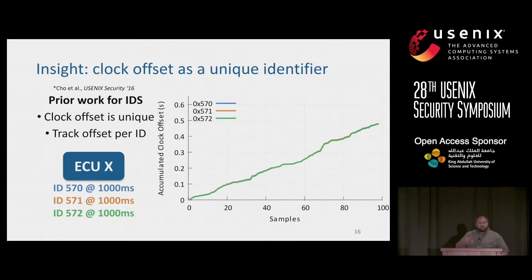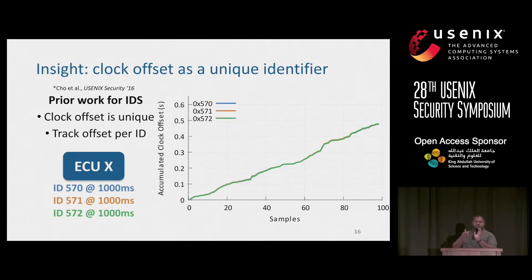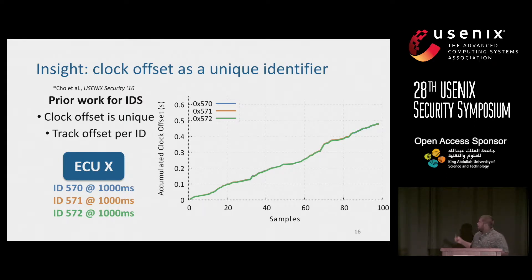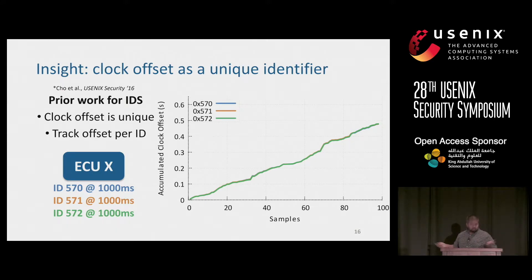Let's borrow an insight from prior work. Prior work, for purposes of building an intrusion detection system, identified clock offset as a unique characteristic that could identify ECUs in the car. Clock offset is basically: if your clock is one second behind mine, that's a one-second clock offset. By tracking this clock offset per message ID, sharp changes could indicate an active attack. We thought, let's repurpose this insight. A single ECU from a real vehicle has three IDs all sent at the same period, and by graphing clock offset versus the number of messages, we can clearly cluster these three IDs into a single source ECU.